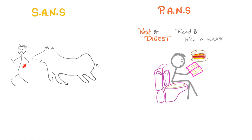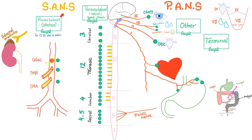Sympathetic is fight or flight. Parasympathetic is rest and digest. So epinephrine and norepinephrine are here — they are fight or flight. Sympathetic is thoracolumbar. Parasympathetic is craniosacral.